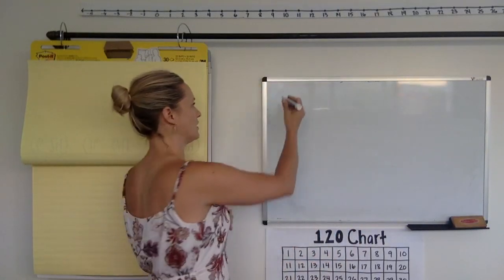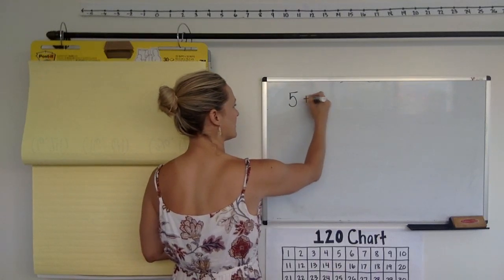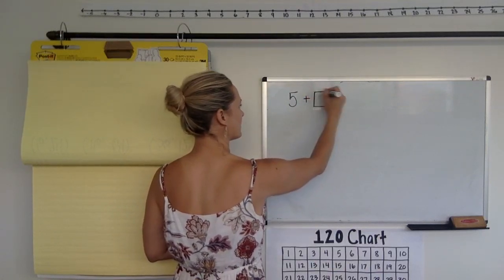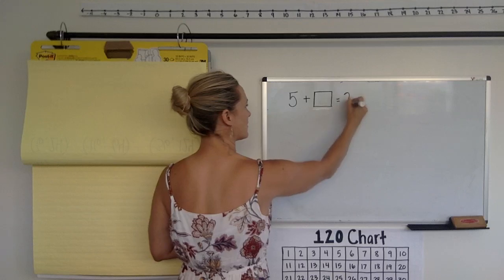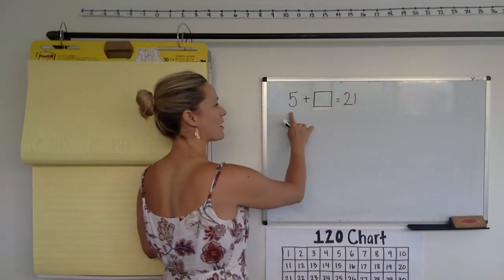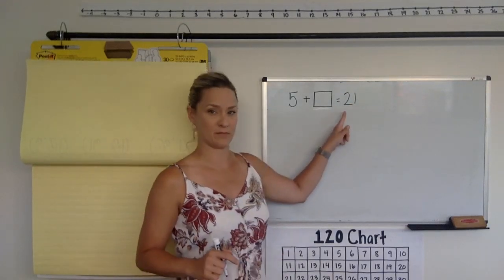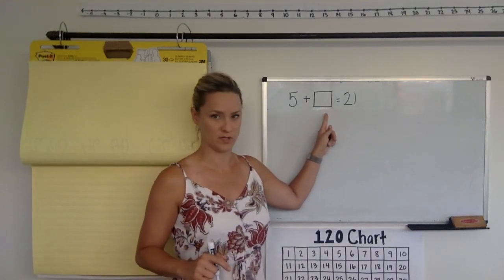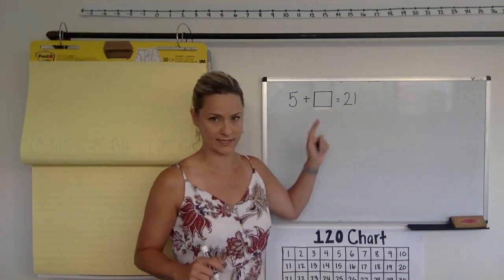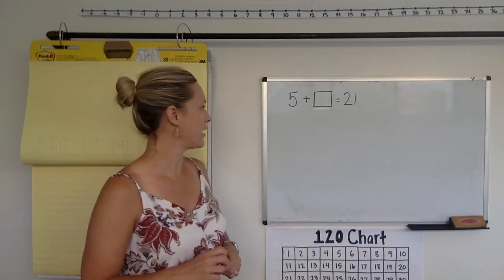How would you solve this? So we know the starting number, and we know the ending number, but we don't know the number in the middle that makes it change. So, how would you do this?